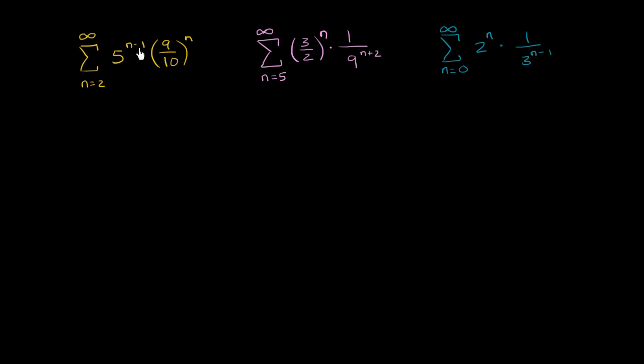So 5 to the n minus 1, that's the same thing as 5 to the n over 5, or you could write it as 5 to the n times 5 to the negative 1, which is the same thing as 5 to the n over 5. And so 5 to the n over 5 times 9 over 10 to the n. This is equal to 1 over 5 times 5 times 9 over 10 to the nth power.